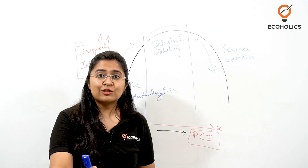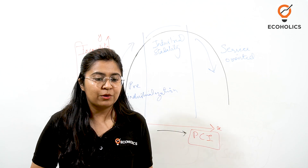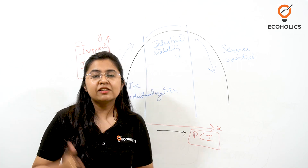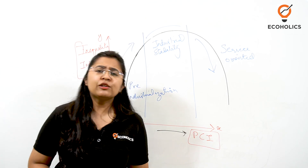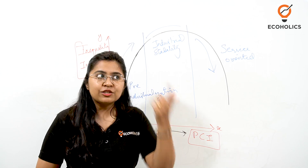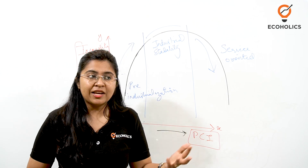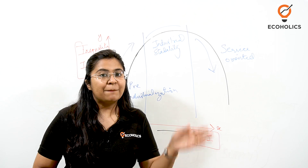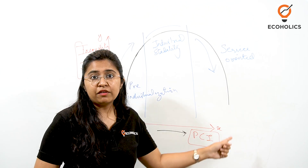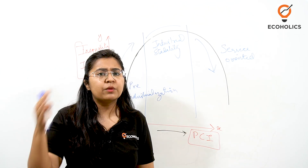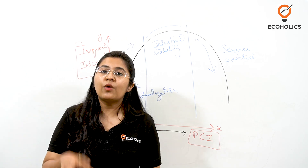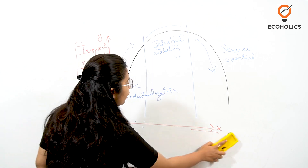For all economics scholars, this is something you can definitely research about. Now there is another curve also known as EKC — the Environmental Kuznets Curve. The Environmental Kuznets Curve is often confused with the original curve because it is misunderstood as a curve given by Simon Kuznets himself. But this is a separate hypothesis that tests the same type of inverted U-shaped curve formation but has been provided by two other economists.